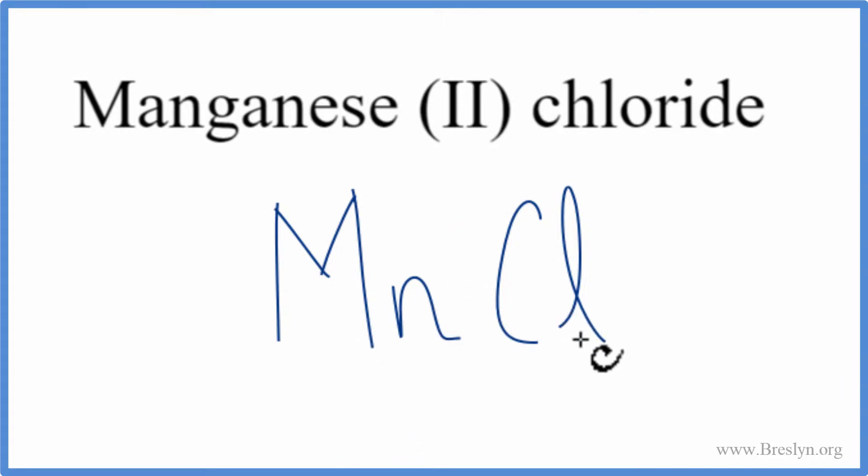Mn, that's a metal. Cl, that's a nonmetal. Metal to nonmetal makes an ionic compound. When we have an ionic compound, we need to consider the charges on the Mn and then on the Cl here.